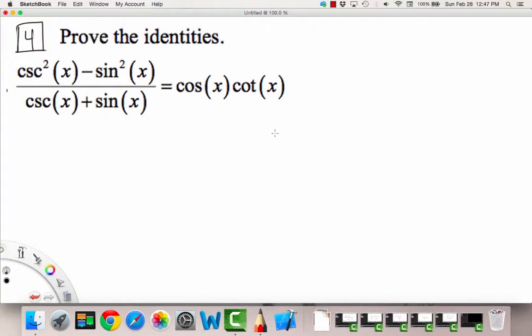Number four asks us to prove the identities, and this should actually just be identity, because there's only one here. So the first thing we're going to start with is recognizing that on the left-hand side, we see something on top that can be factored.